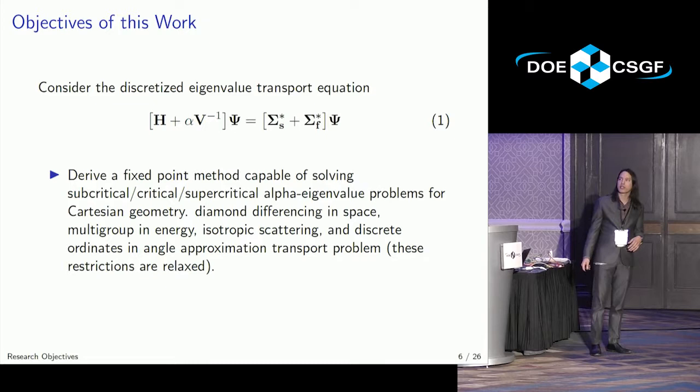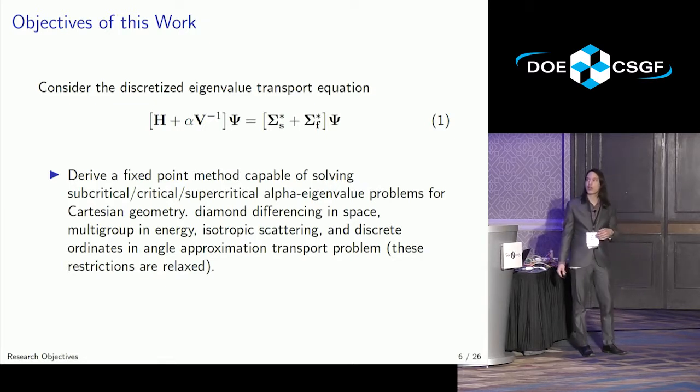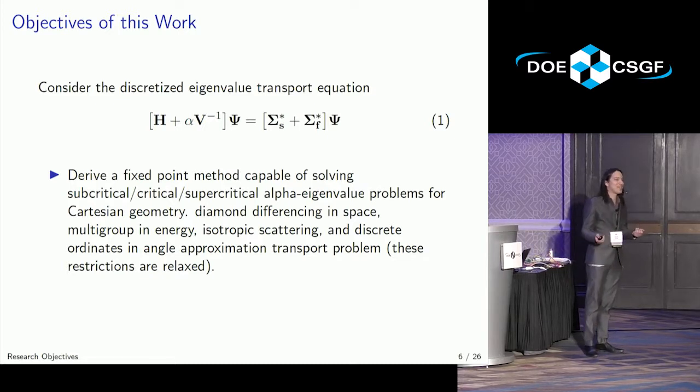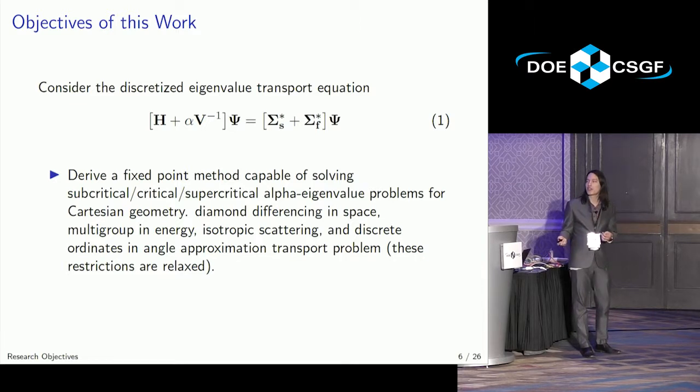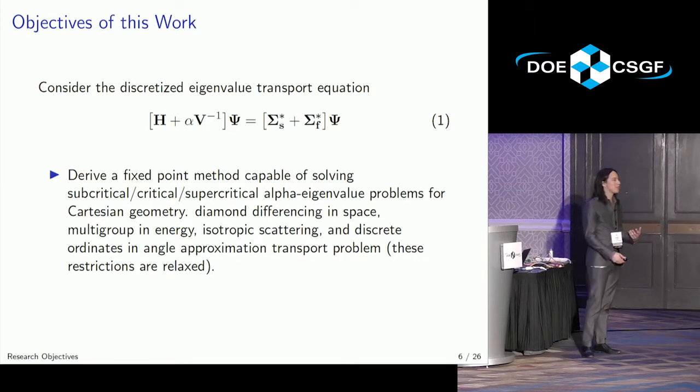The objectives of this work were to derive a fixed-point method capable of solving subcritical, critical, and supercritical alpha eigenvalue problems. We initially started in Cartesian geometry, because that's easy to actually show some results in, doing what is called diamond differencing in space - it's just a central difference in neutron transport, but nuclear engineering likes to give everything its own special term. Multi-group in energy with isotropic neutrons scattering and discrete ordinates in the angle approximation.